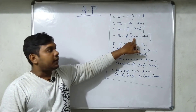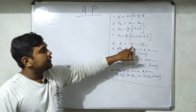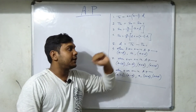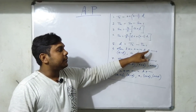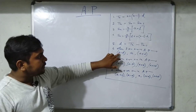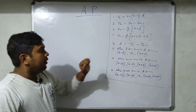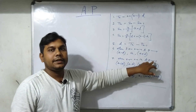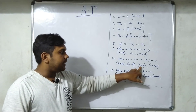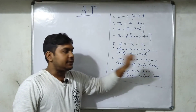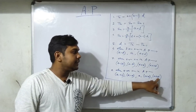A is the first term, D is the common difference. D is equal to Tₙ minus Tₙ₋₁. For four consecutive terms in AP, the notation used is: a - 2d, a - d, a, a + d, a + 2d.